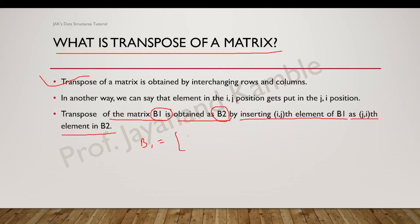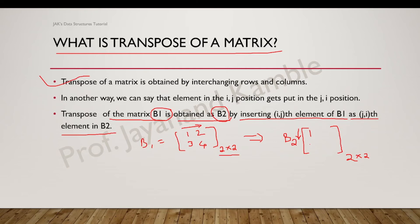For example, we have a matrix B1 equal to [1, 2; 3, 4] — a 2 by 2 matrix. Its transpose is represented as B2. The number of rows becomes the number of columns, so a 2 by 2 matrix remains 2 by 2. The row elements of B1 become the column elements of B2, so row [1, 2] becomes column [1, 2] and row [3, 4] becomes column [3, 4].